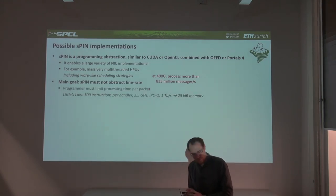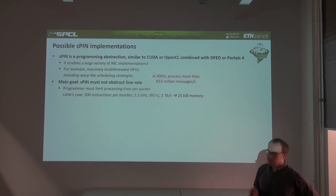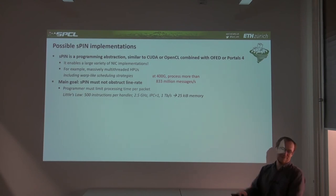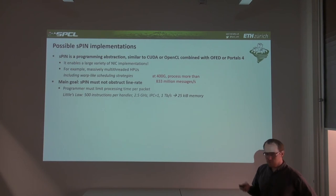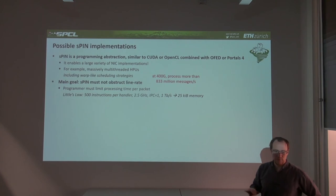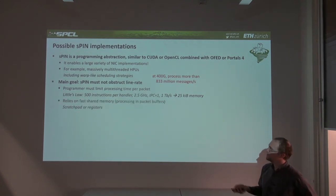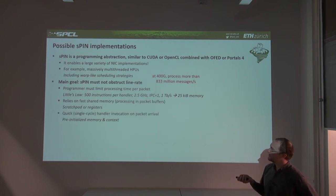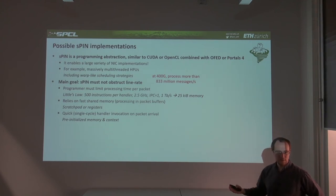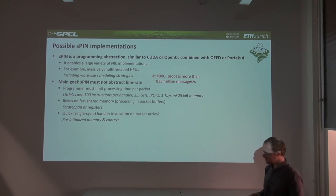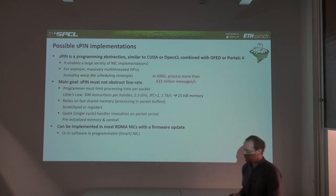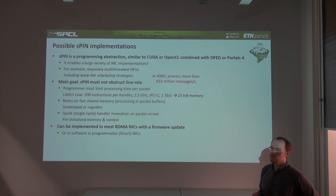The programmer must limit processing time per packet. With fast shared memory, quick handler invocation is needed — every 1.2 nanoseconds a new packet arrives. We strongly believe all of this can be implemented in most modern RDMA NICs with a firmware upgrade, or at least in software-programmable smart NICs, like the Mellanox FPGA NIC, the Microsoft FPGA NIC — both RDMA NICs — or the Broadcom NIC, an RDMA NIC with ARM cores on the SoC.